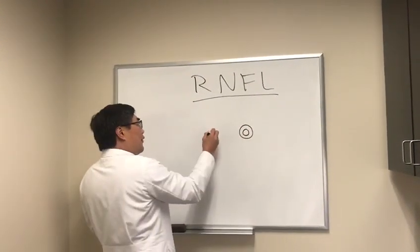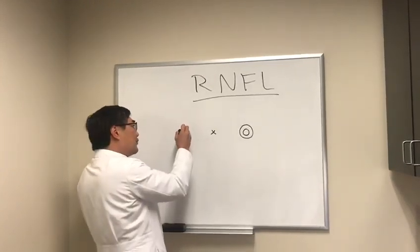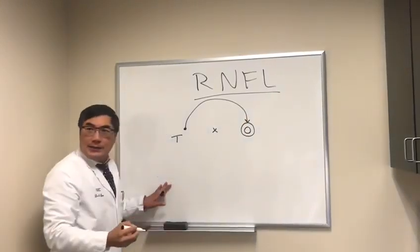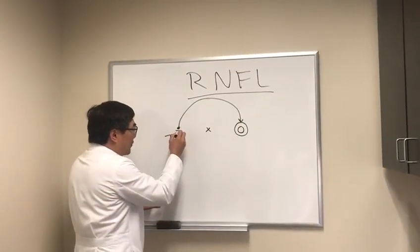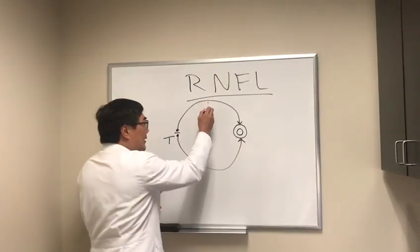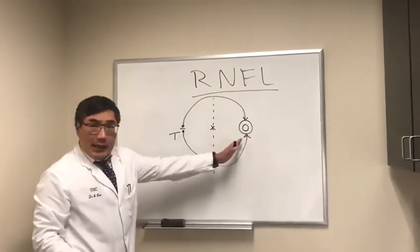If this is the optic nerve, the fovea is the center of the eye. Fibers from the temporal portion of the retina arch around the fovea and insert into the top of the disc. The inferior fibers also do the same thing and insert into the bottom of the disc. Because the fovea is the center of the eye and not the optic nerve,